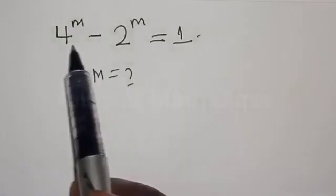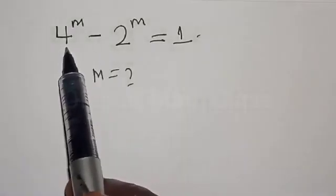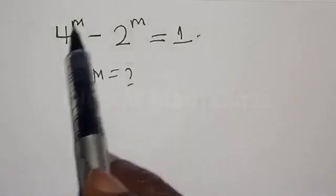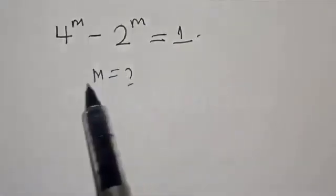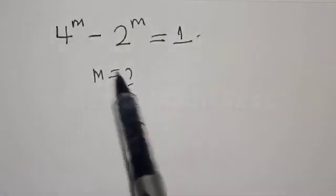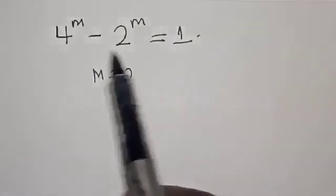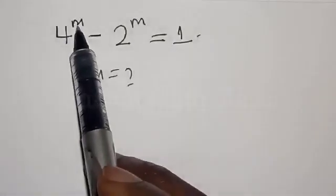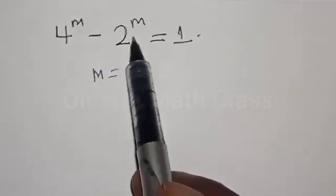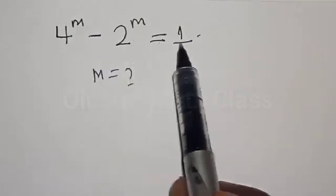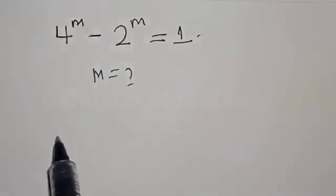Welcome to my class, the Olusta class. In today's class, we want to look at how we can quickly find the value of m from this given equation: 4 raised to power m minus 2 raised to power m is equal to 1.